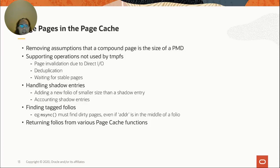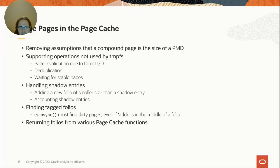With the IO path taken care of, we can look at what it takes to actually support large pages in the page cache. A lot of the patches I've already gotten simply remove the assumption that a compound page is exactly the size of a PMD. So instead of asking 'is this page a compound page? Yes — then do two megabytes of stuff,' we now ask the page 'how large are you?' Currently the answer always comes back as either four kilobytes or two megabytes, because none of the other code is upstream yet. But the support is there — perhaps 50 patches to rip out all the assumptions that a compound page was necessarily PMD-sized.